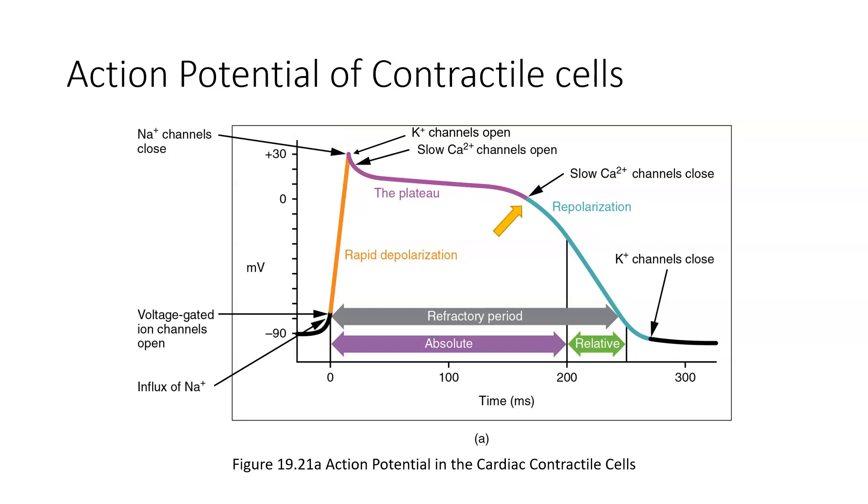After about 150 milliseconds, the calcium channels close first, allowing the potassium ions to repolarize the membrane until it reaches the resting potential. At this point, the contractile cell will wait for another incoming stimulus before firing another action potential.